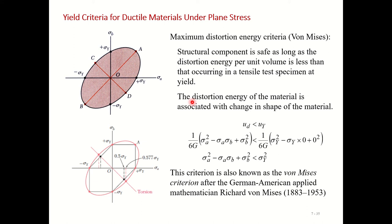For now, keep in mind that the distortion energy per unit volume equals (1/6G)(σ_a - σ_b)², where σ_a and σ_b are the principal stress components and G is the shear modulus of the material, which can be obtained from the torsion test. This must be less than (1/6G)(σ_y - 0)².